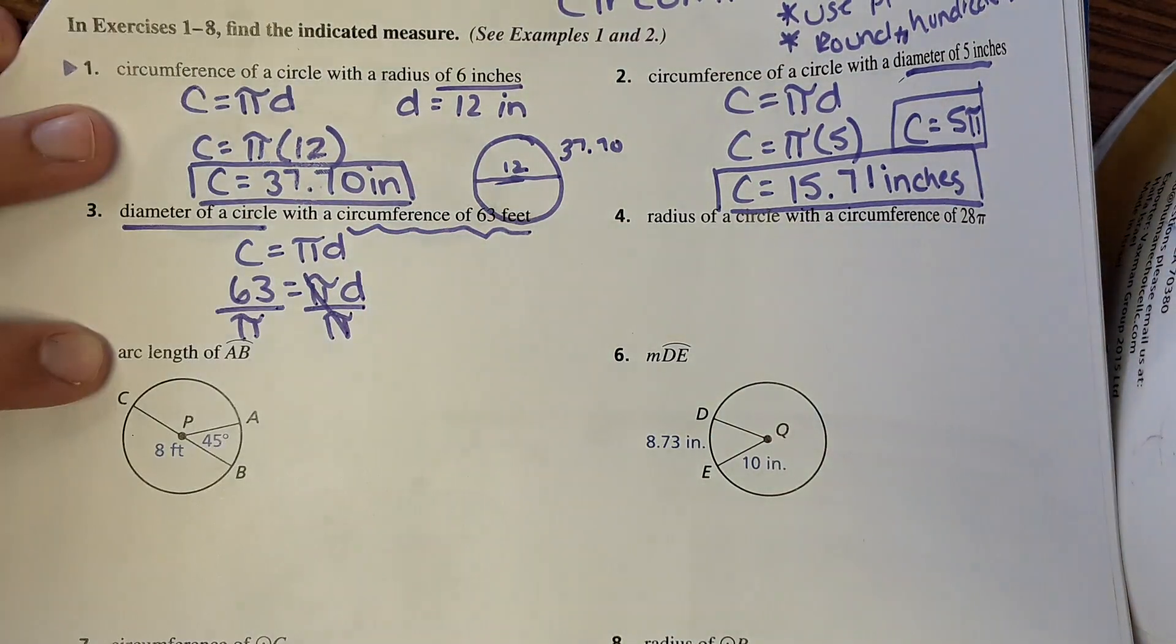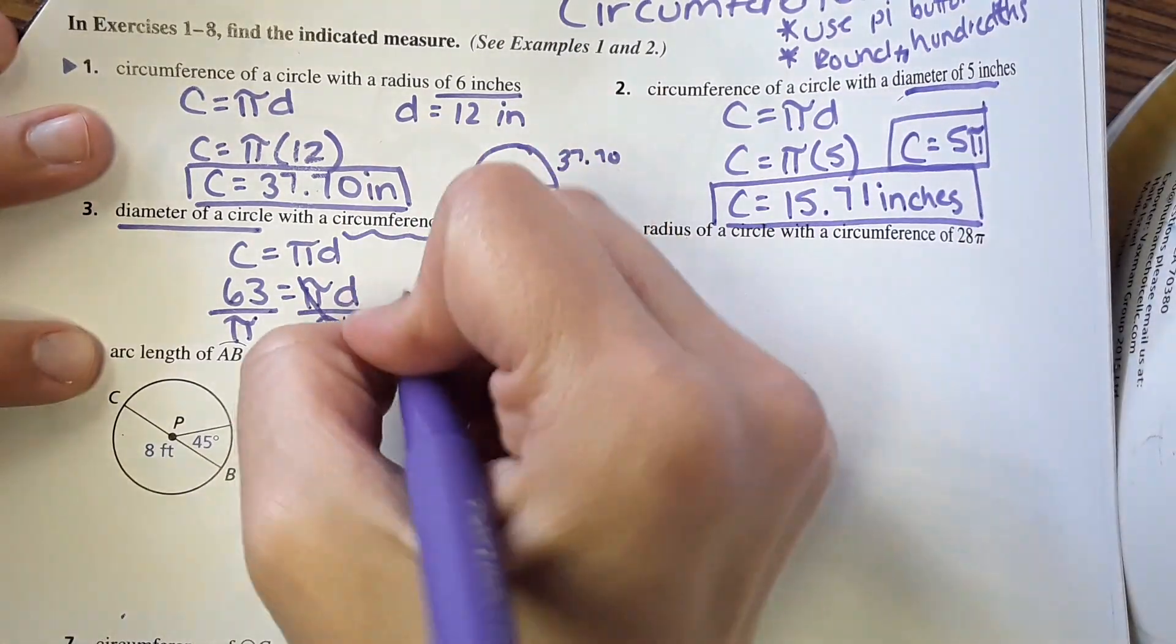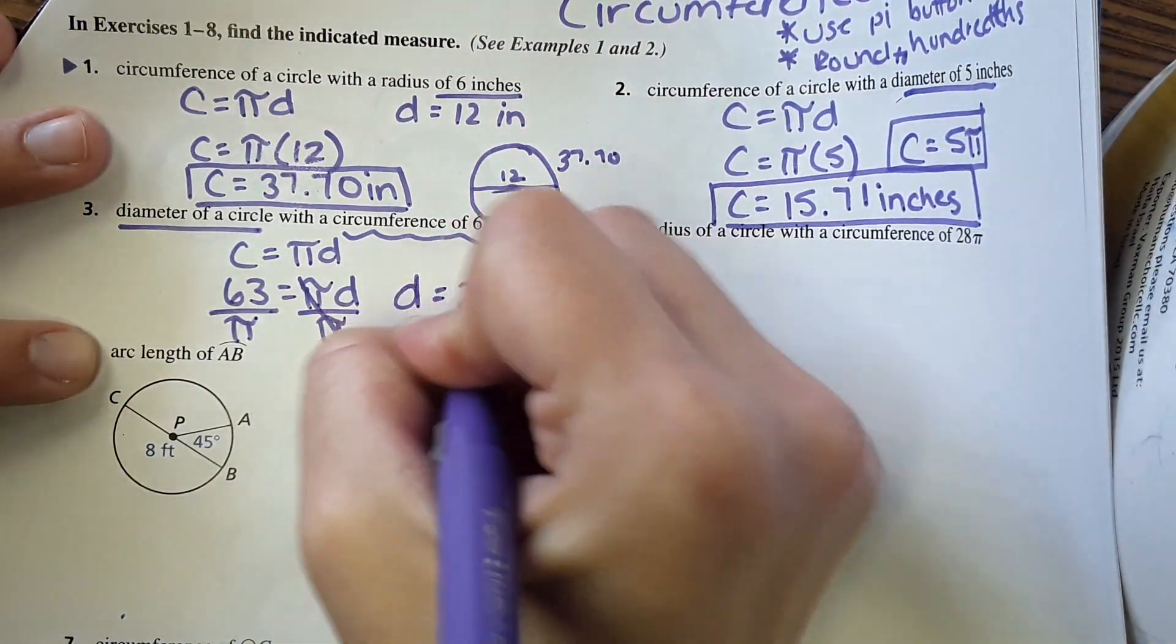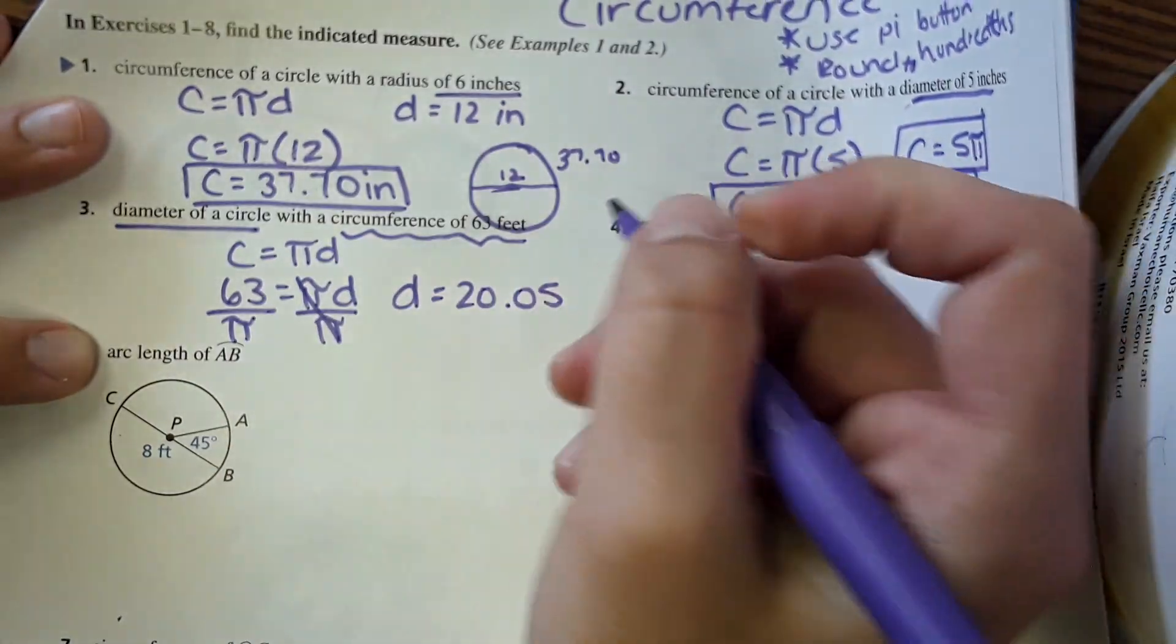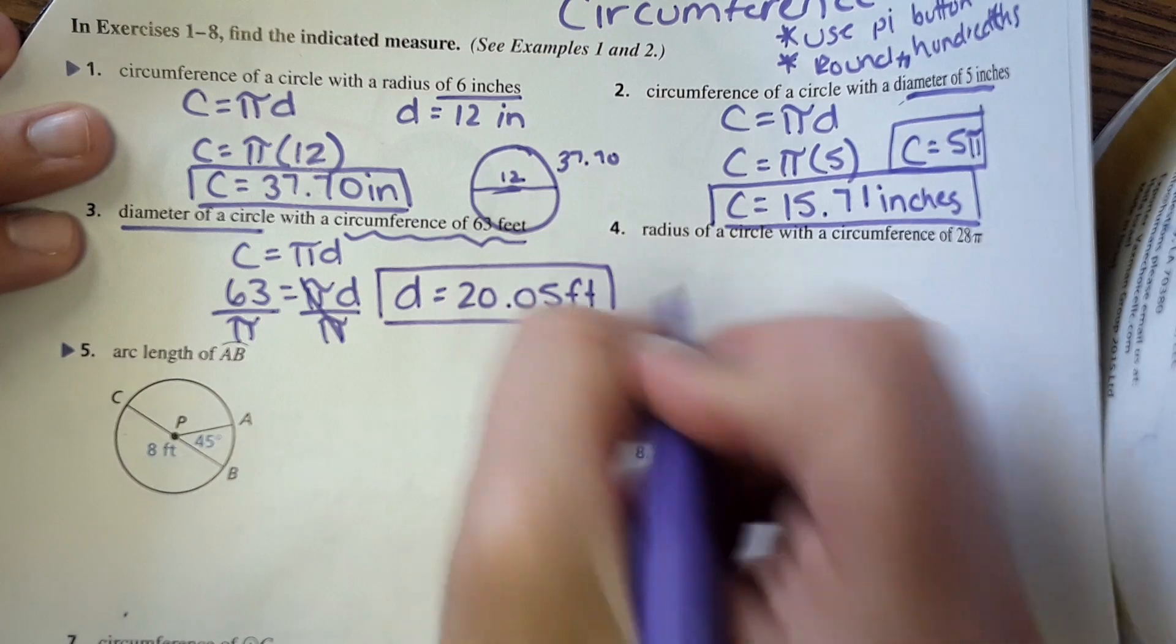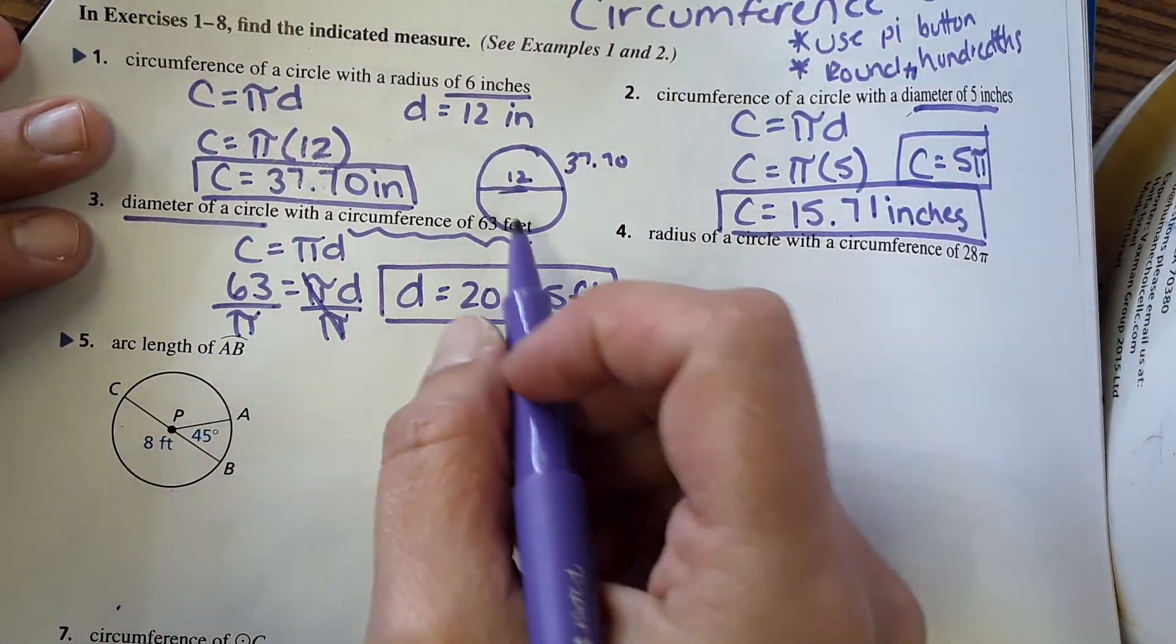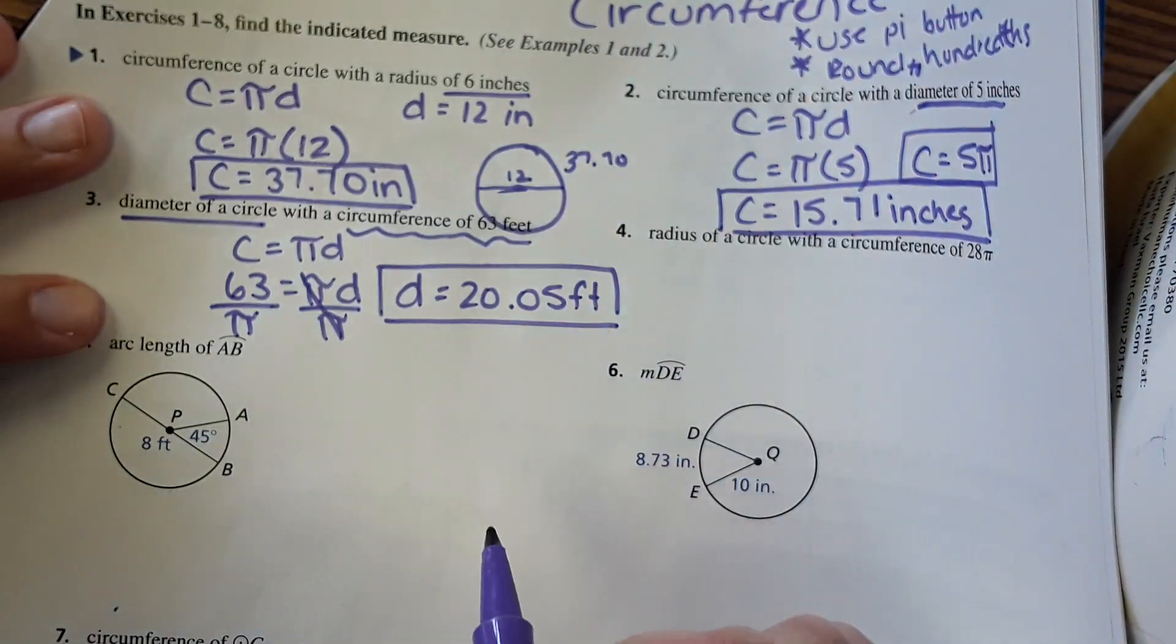Sixty-three divided by pi comes out to twenty point zero five feet. And you can make sure it's logical, the diameter should be about a third of your circumference.